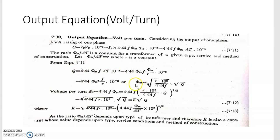So phi_M represents the maximum flux. The expression under the root involves r × 10³ / (4.44 × f) × KVA. The voltage per turn E_t equals 4.44 × f × phi_M. Replacing the value of phi_M in this equation, we get the volt-per-turn formula. Taking the constant terms together, E_t = k × √(KVA), where k involves the constant terms.